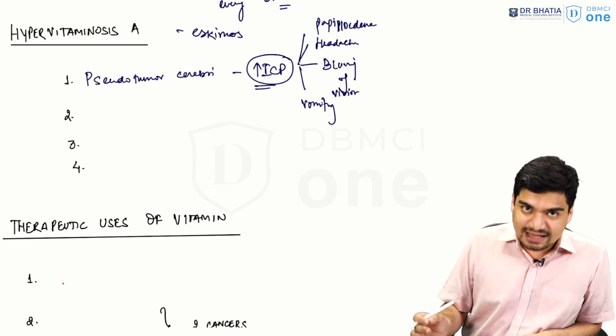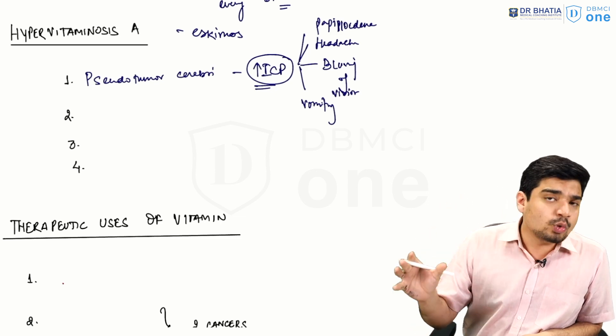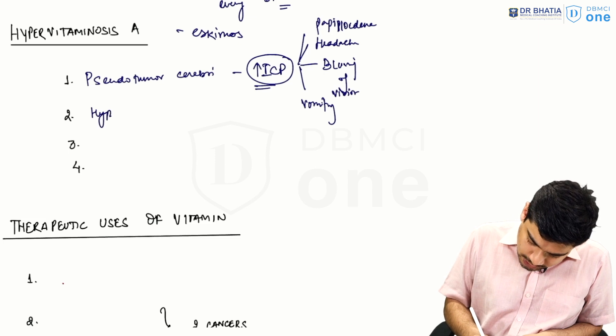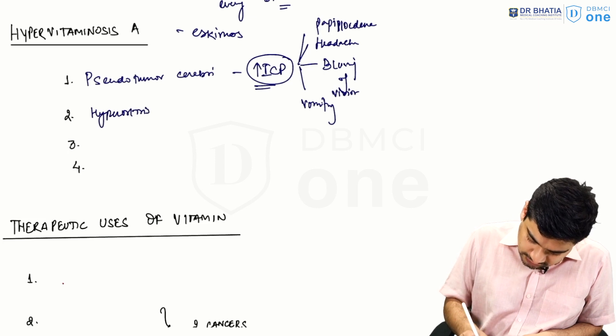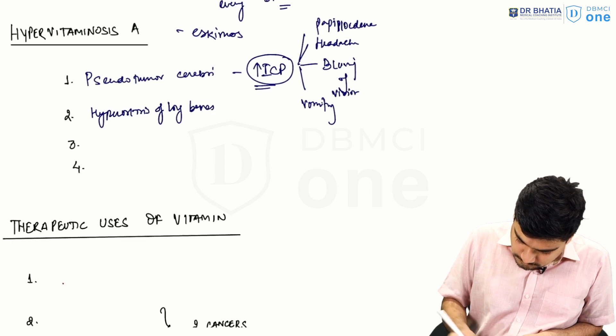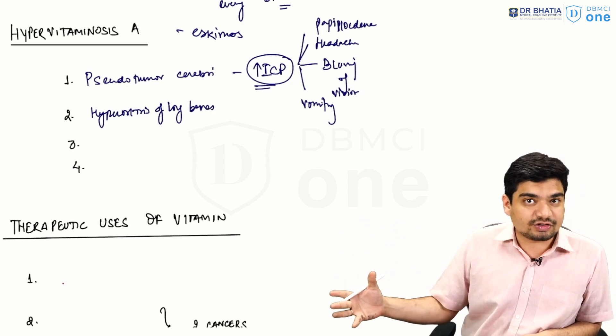Apart from this, there is also what is called bone dysfunction or bony malformation, also referred to as hyperostosis of long bones. And this results in chronic fractures.